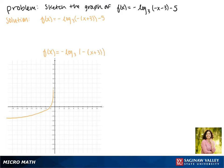Now since we're adding 3 to x, this tells us to move 3 places to the left. So that now we pass through the point negative 4, 0.